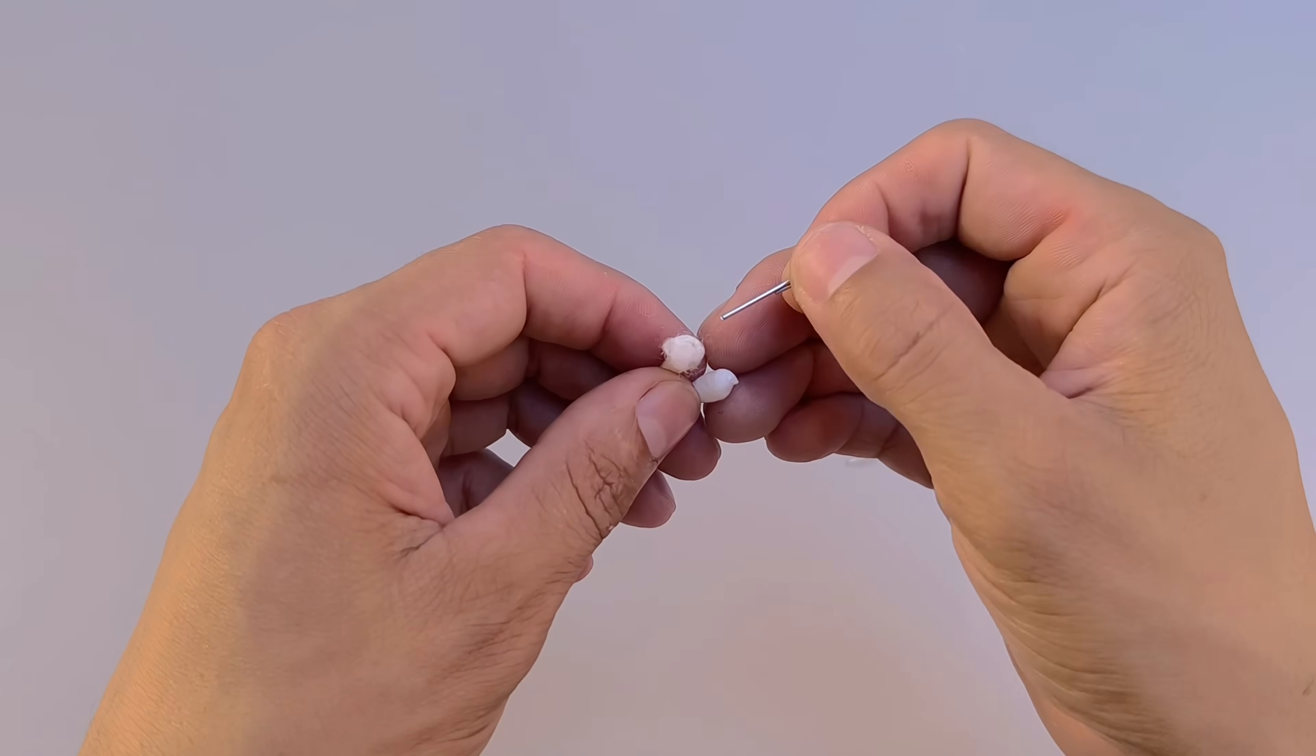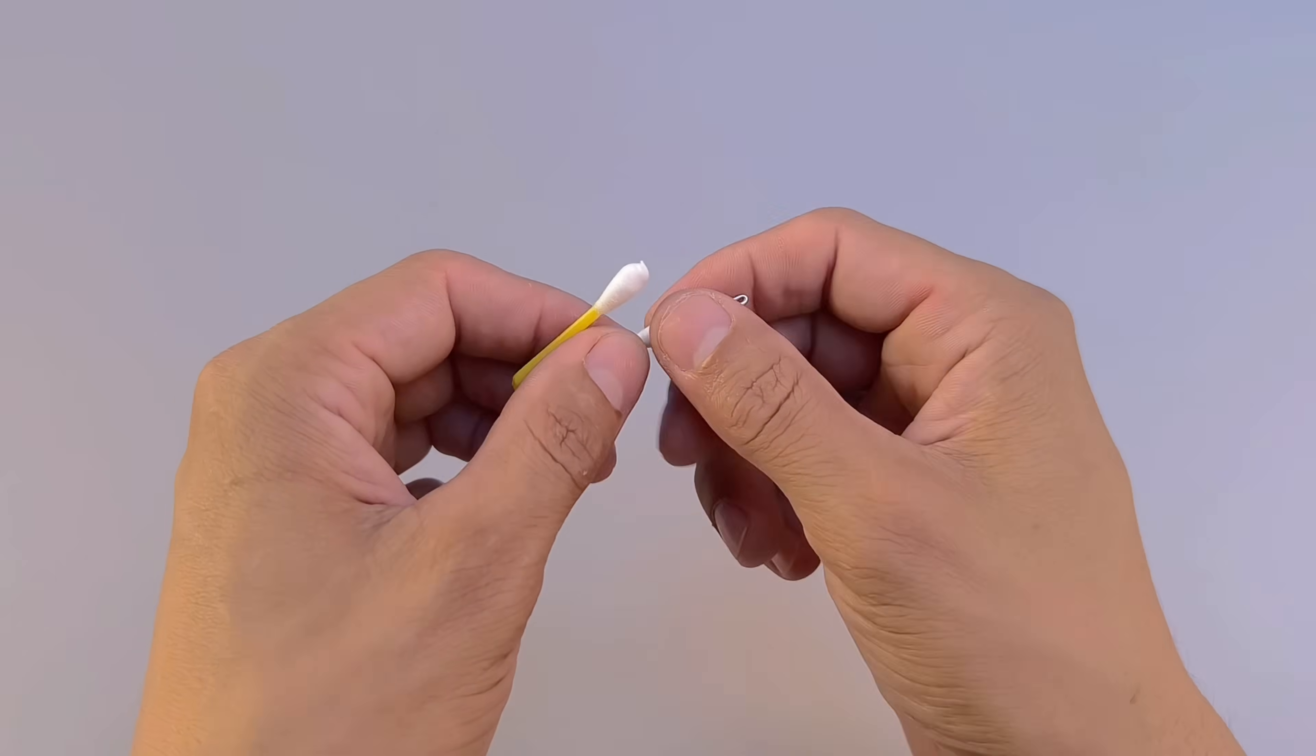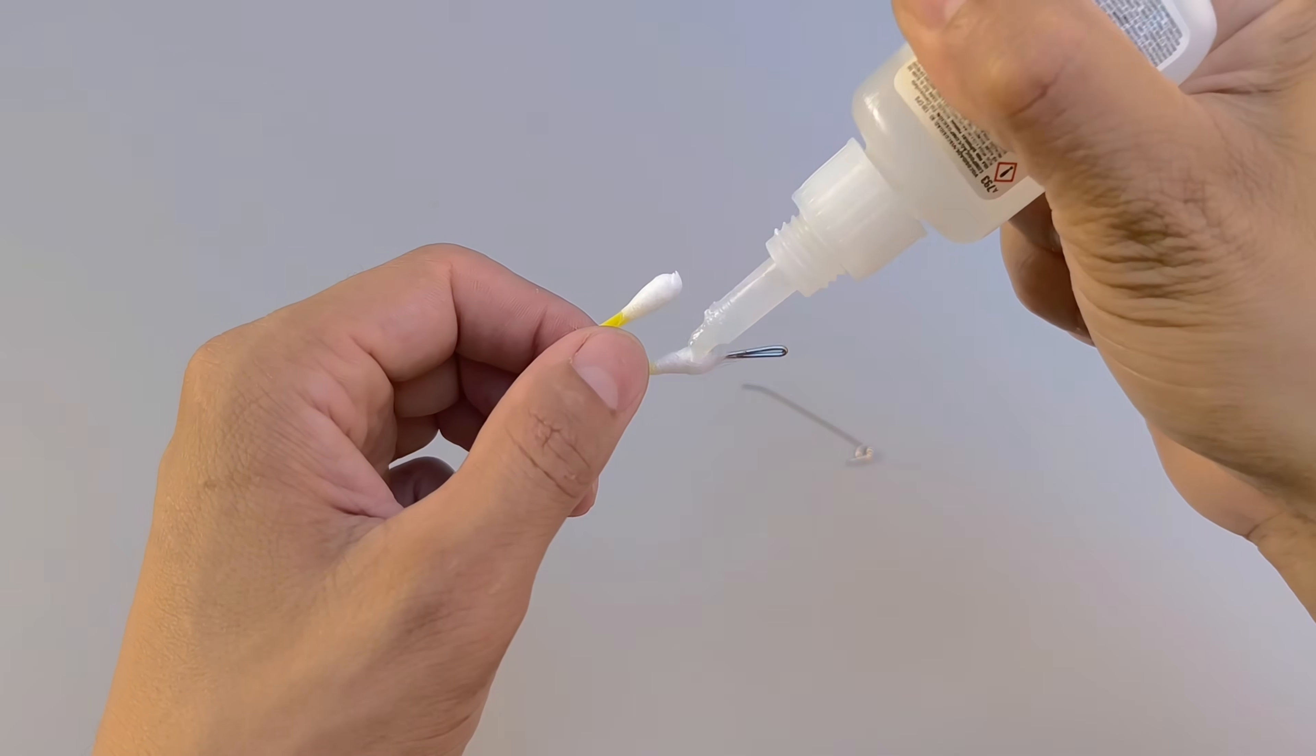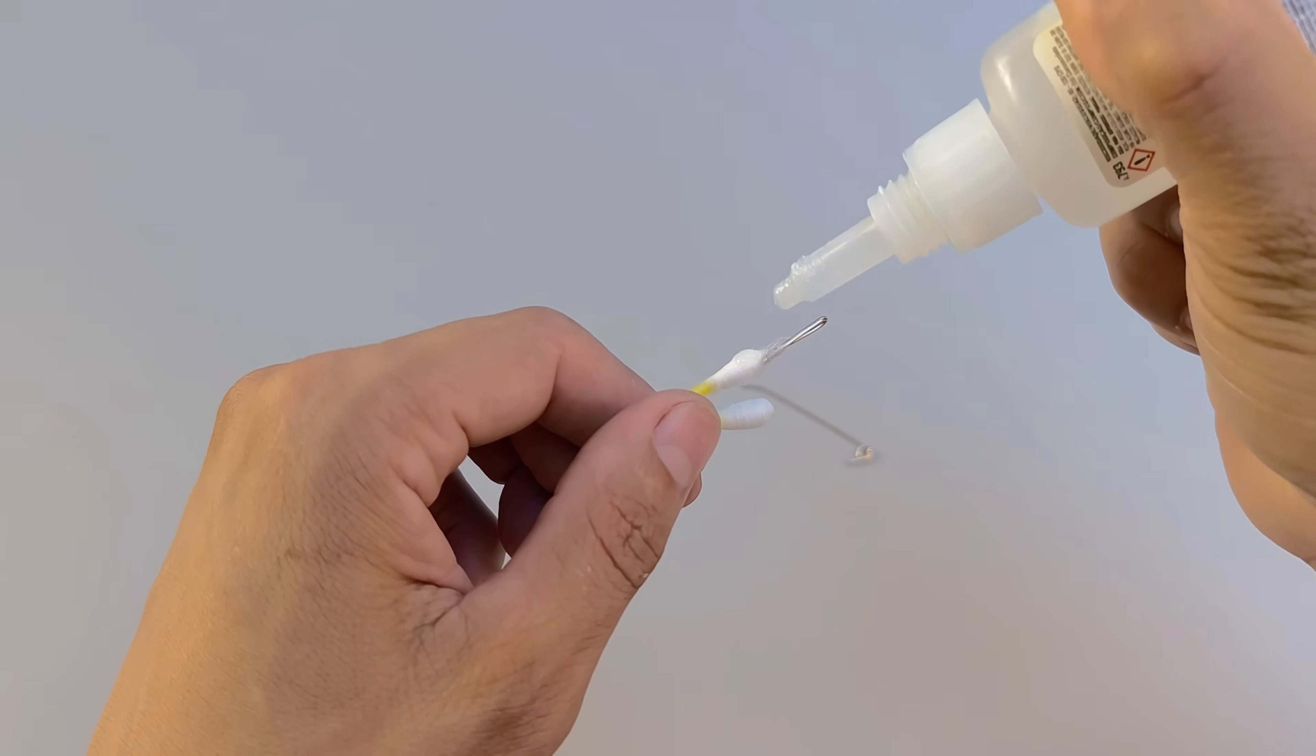This small device now needs to be inserted into one end of the cotton swab. To ensure the mechanism is securely attached, use a little super glue in place of the cotton and wait a few minutes for the glue to dry completely.